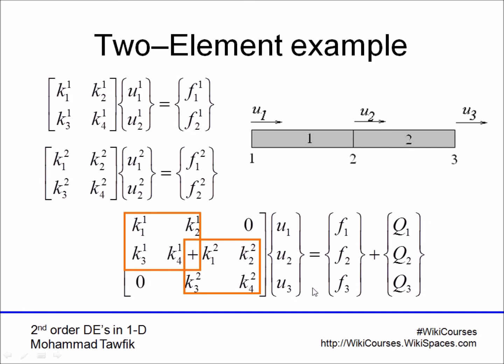We just added—the intersection is only in this term where u₂ appears in both equations. Otherwise k₂² is put as is, multiplied by u₃, and k₃¹ is put as is from the first element.